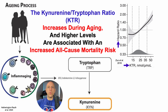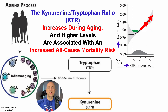In terms of what's significant, we put up a red line at a hazard ratio of 1, and there we can see that when the KTR was in the 15 to 23 range, that was associated with the lowest all-cause mortality risk, whereas relatively higher values, greater than 25, were associated with a significantly increased all-cause mortality risk.